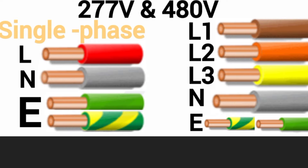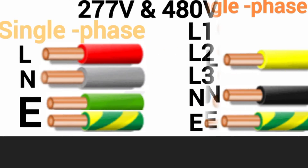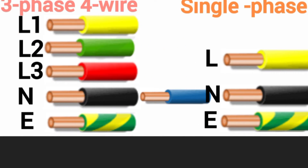Now, there are several color codes used around the world. For instance, in one case you will find a color code for single-phase wiring using yellow for live or hot, blue or black for neutral, and green with yellow stripes for earth or ground.